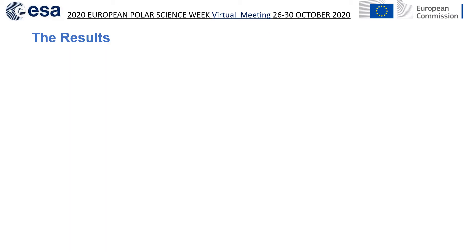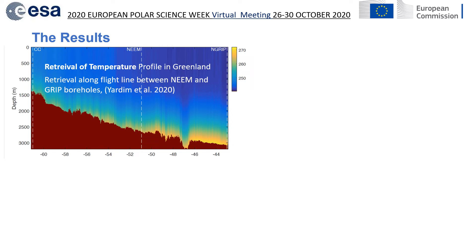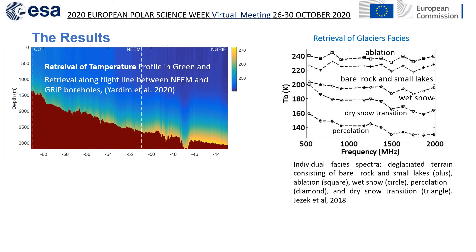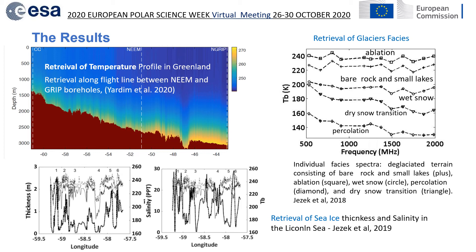Here are some interesting results from the campaigns published in a recent paper. An example is the retrieval of the temperature profile in Greenland — the temperature profile from top to bottom is represented along the flight line, and a computation of accuracy was also provided. Another result is the classification of glacier facies; the figure shows how the frequency spectrum changes depending on the glacier facies type. Lastly, another result is the retrieval of sea ice thickness and salinity at different positions along the flight obtained during the campaign.